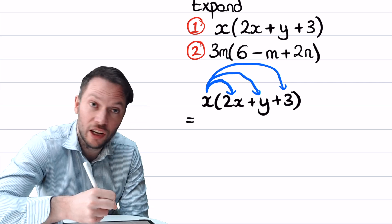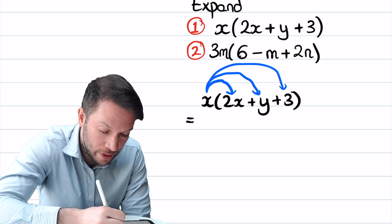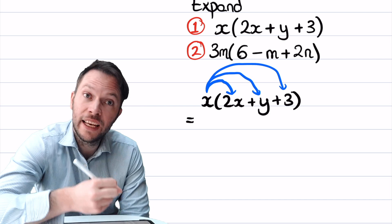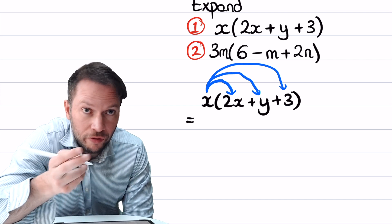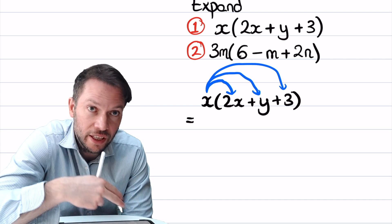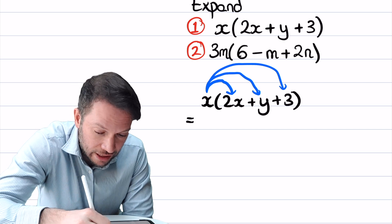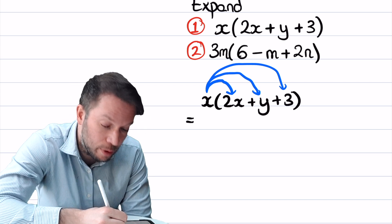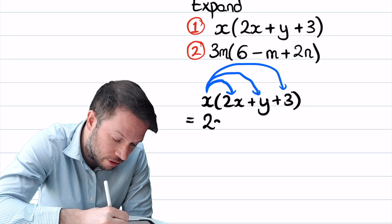So let's do the x times the 2x first. Well, x multiplied by x is x squared, because for example 3 squared means 3 times 3, doesn't it? So x squared means x times x. So we write that as x squared, but we've also got that 2 there, so it's 2x squared.